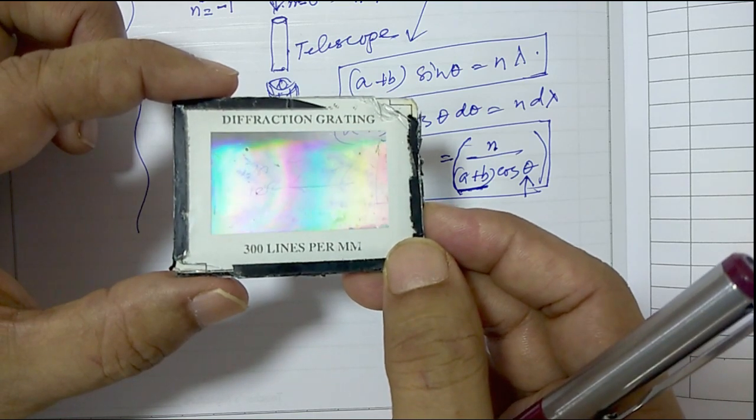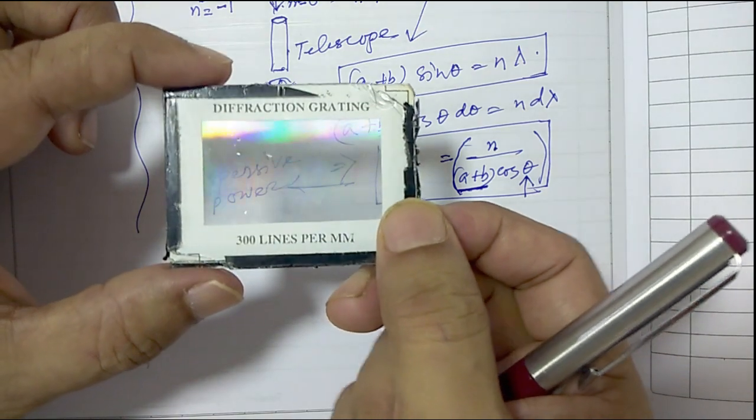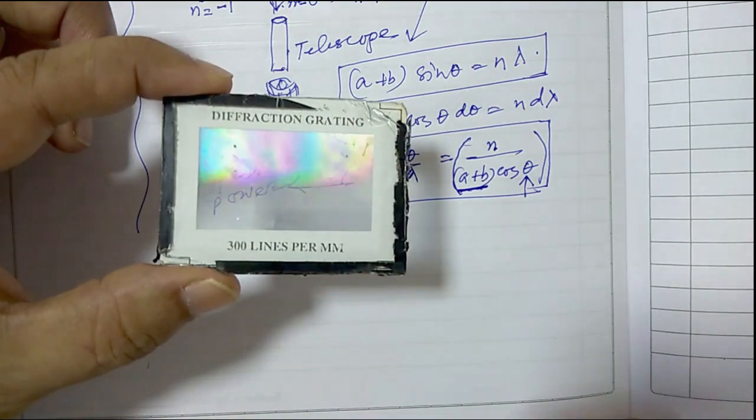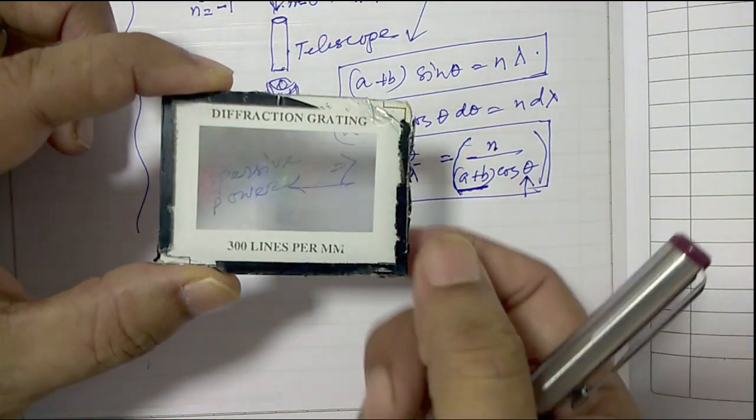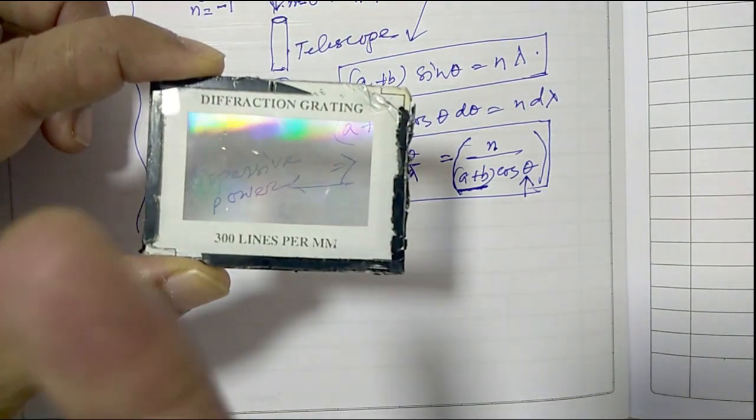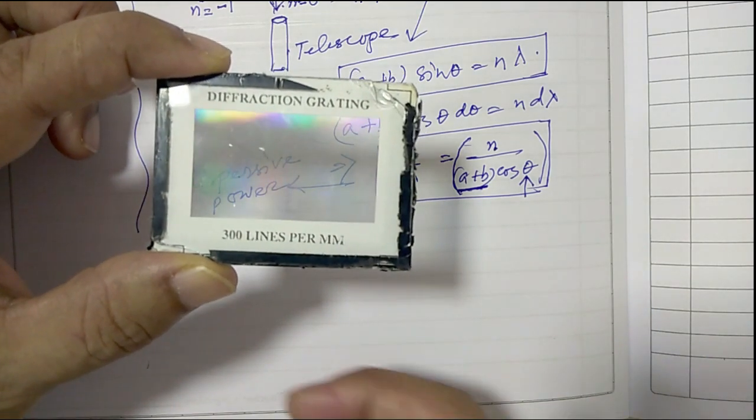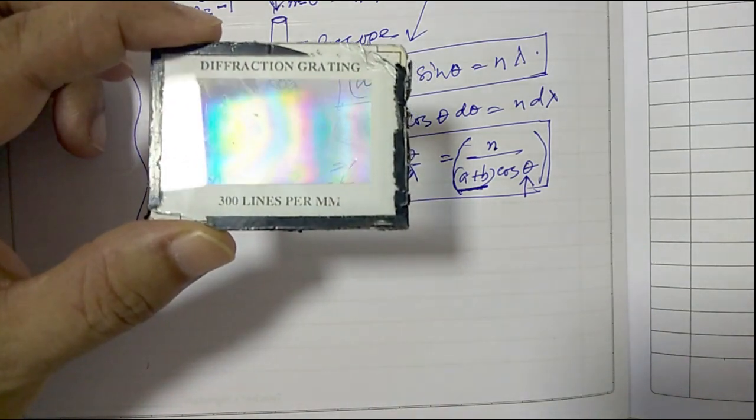But the diffraction pattern that we see in this particular experiment is due to the light getting transmitted from one side and then coming out from the other side. So there are two different types of diffractions: one is called diffraction due to reflection and diffraction due to transmission.